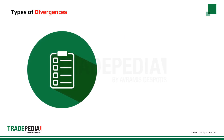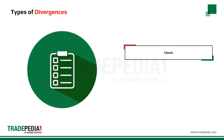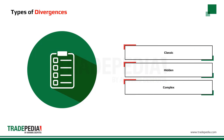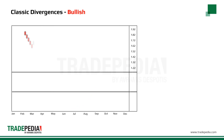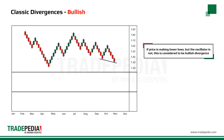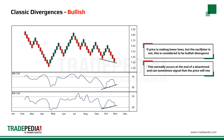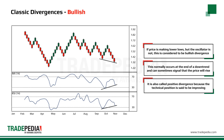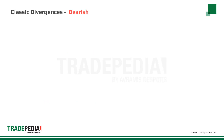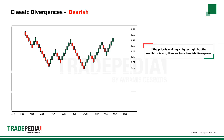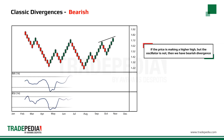There are three types of divergences: the classic divergence, the hidden divergence, and the complex divergence. Classic divergence: if price is making lower lows but the oscillator is not, this is considered bullish divergence. This normally occurs at the end of a downtrend and can signal that price will rise. It is also called positive divergence because even though the price is declining, it is doing so at a slower and slower pace. Conversely, if price is making higher highs but the oscillator is not, we have a bearish divergence.